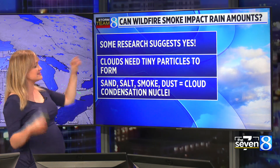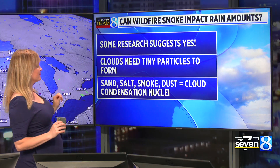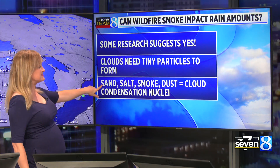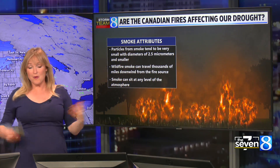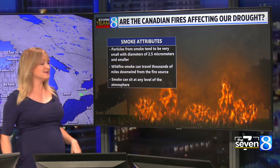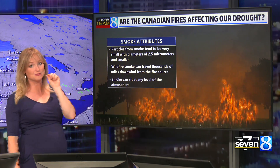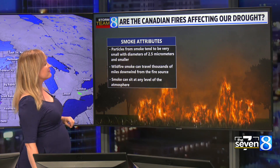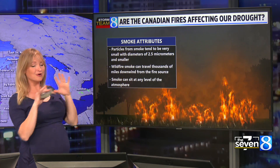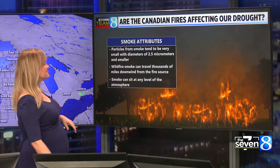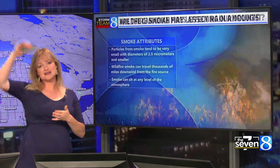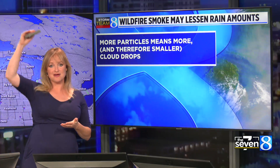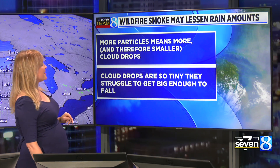And some research suggests that wildfire smoke is impacting our rainfall chances. Here's the thing: clouds need tiny particles in order to form, and those tiny particles can be sand, salt, smoke, or dust. These become something called cloud condensation nuclei. Wildfires launch that right into the sky — particles from smoke tend to be really, really tiny, only 2.5 micrometers, which is a perfect size for cloud condensation nuclei. Wildfire smoke can travel thousands of miles downwind and can sit at any level of the atmosphere, affecting any cloud bank from the surface all the way to the top.